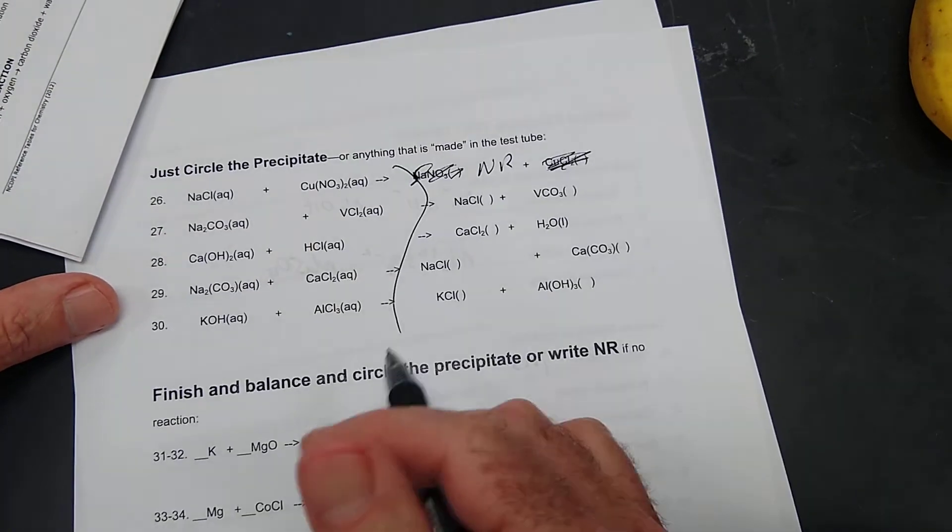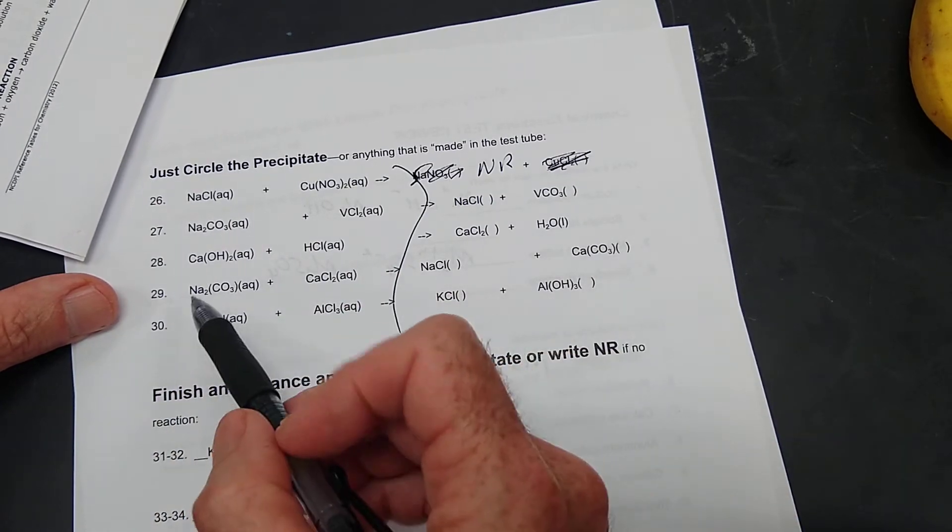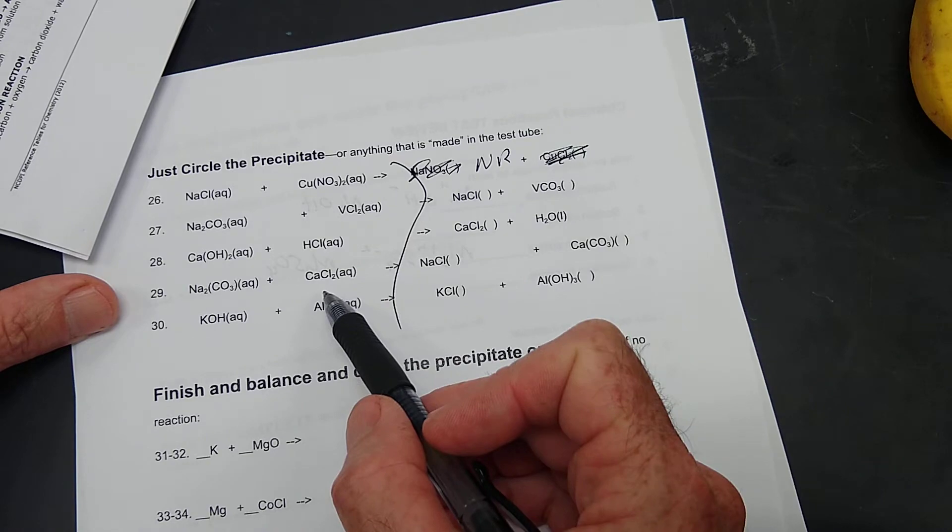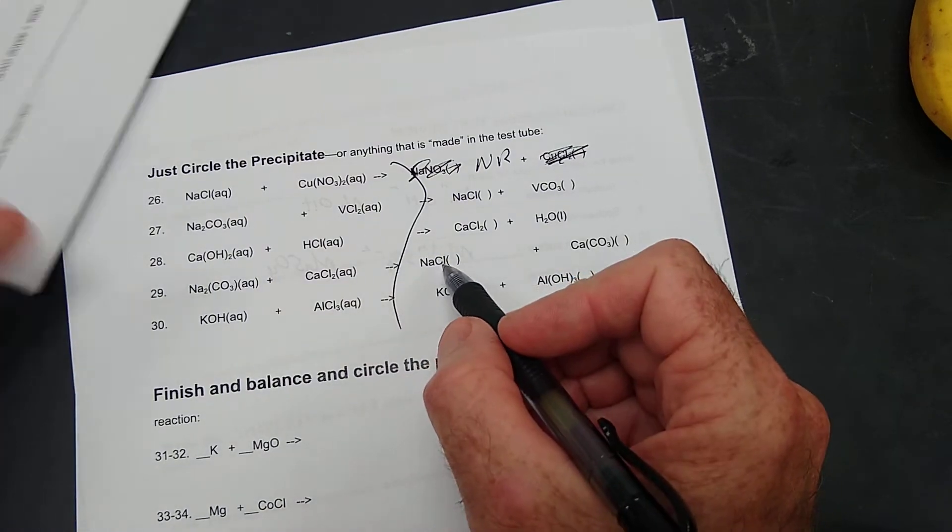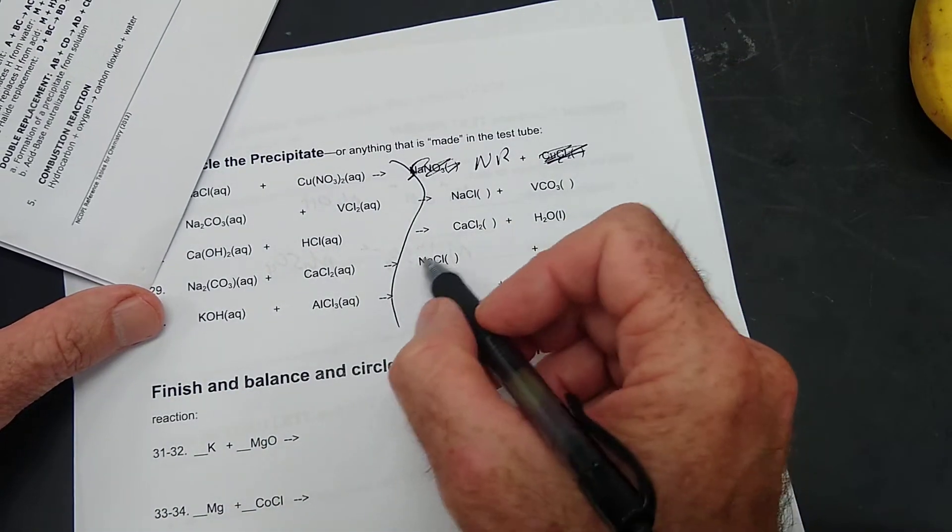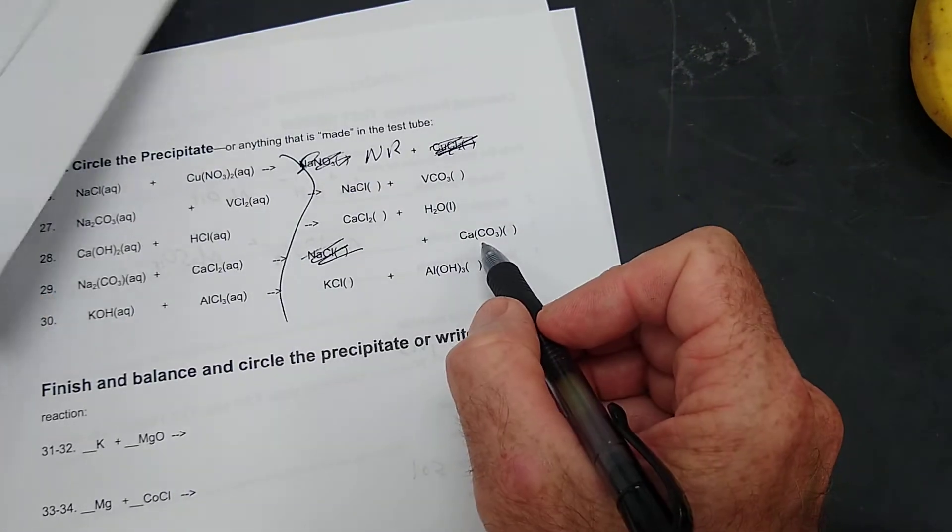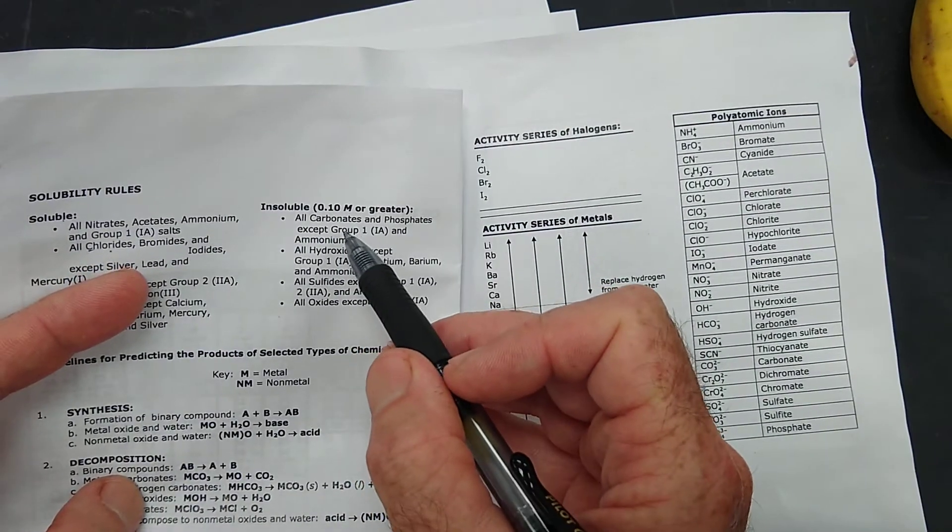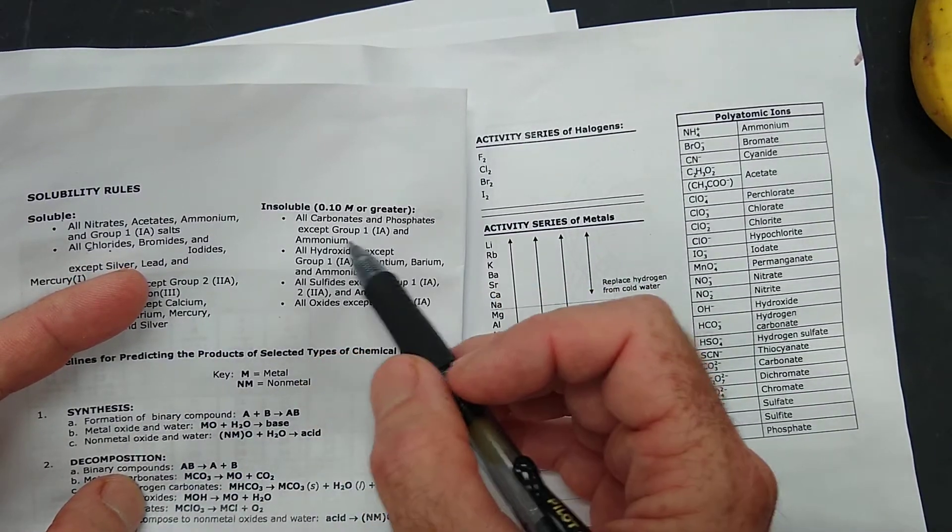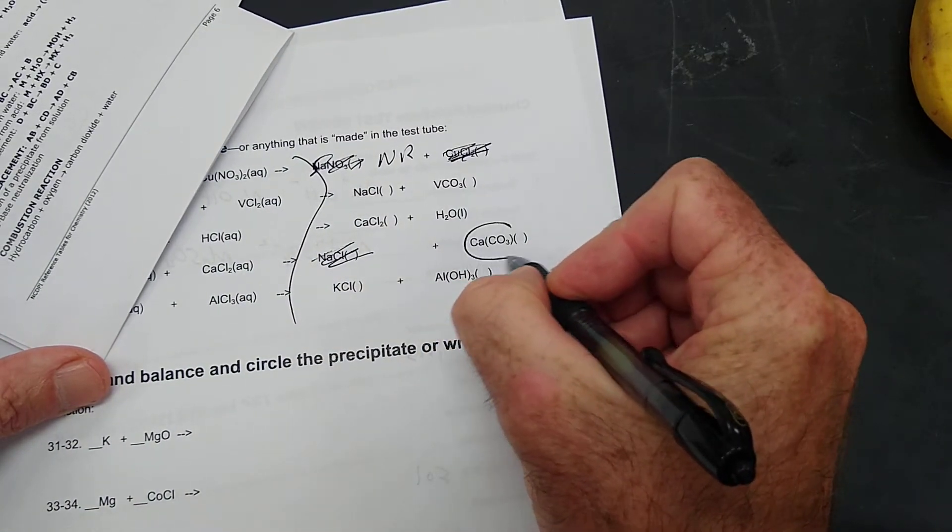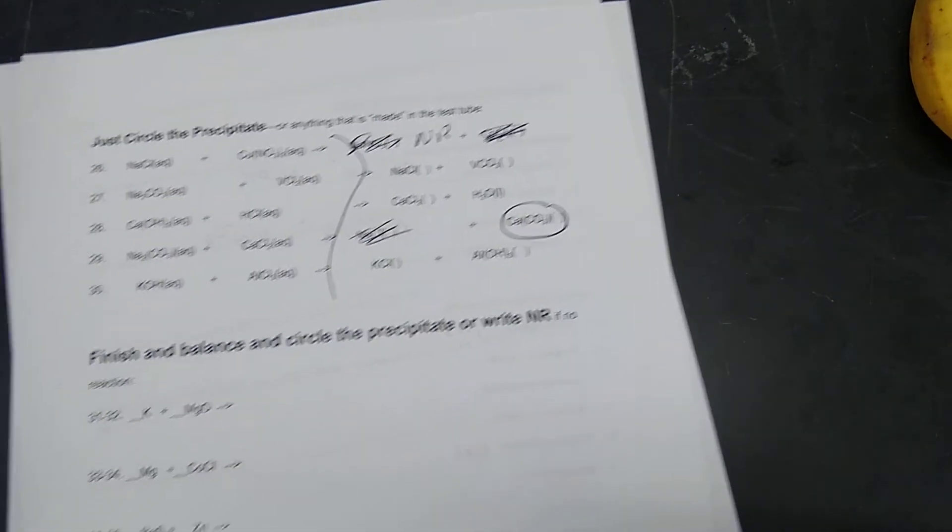Now let's try number 29. Sodium - these are obviously aqueous because they're the reactants. Sodium chloride. That's table salt. All chlorides are soluble, so that's soluble. And let's see. Calcium carbonate. All carbonates are insoluble except group one. So that is the precipitate right there.